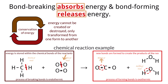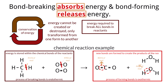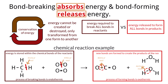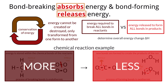By comparing the energy required to break the bonds in the reactants with the energy released when forming the bonds in the products, we can determine the overall energy change, delta H, of the reaction. If the products have less energy than the reactants, the excess energy is released, making the reaction exothermic — delta H is less than zero.